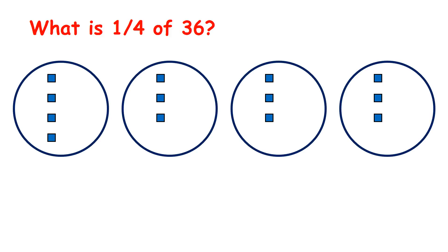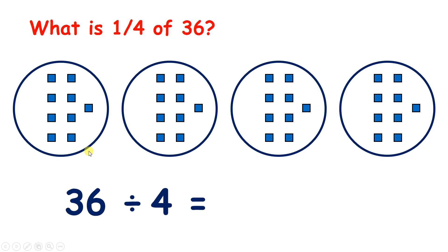1, 2, 3, 4, 5, 6, 7, 8, thirty-two, and thirty-six. So we have nine in each circle, so a quarter of thirty-six, or thirty-six divided by four, is nine.